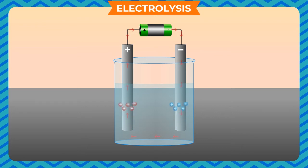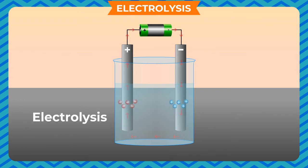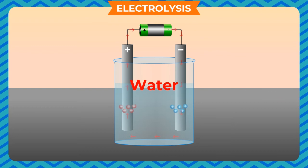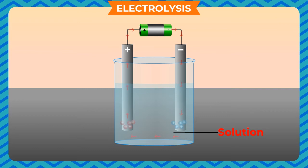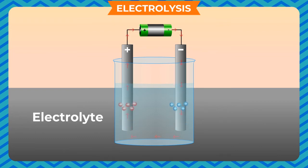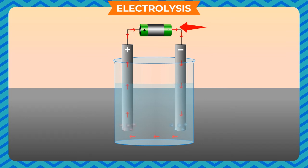It was found by Sir Humphrey Davy that when electric current was passed through certain substances, they undergo a chemical change to give a new substance. This process is called electrolysis. When electric current passes through a conducting solution, it dissociates the solution. The solution that conducts electricity is called an electrolyte, and the process by which an electrolyte is dissociated with the help of electricity is called electrolysis.